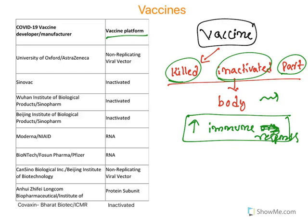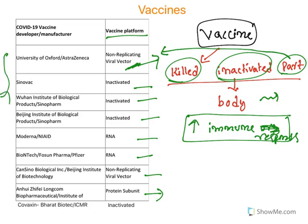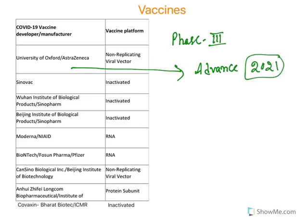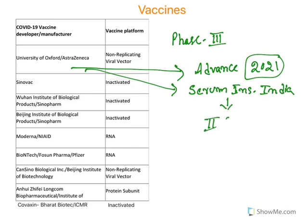There are a lot of vaccine platforms. Non-replicating viral vector means a particular part is introduced into the human body using a vector. Inactivated means all the virus is inactivated. RNA vaccines use part of the viral RNA. Protein subunit vaccines use a part of the virus. All these vaccines are in phase 3 clinical trials. The vaccine from the University of Oxford and AstraZeneca is in a very advanced state; the World Health Organization hoped the vaccine may come in early 2021. It is also partnered with the Serum Institute of India, which is preparing batches and conducting phase 2 and phase 3 clinical trials in India.